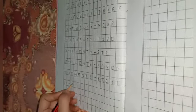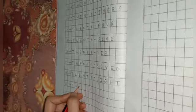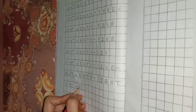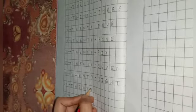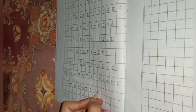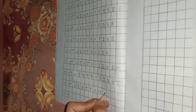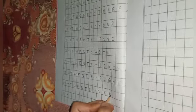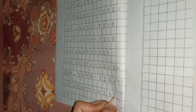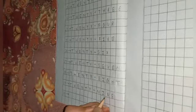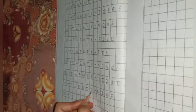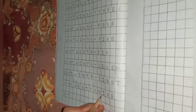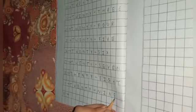Next is 29. T-W-E-N-T-Y, that's 20. N-I-N-E, that's 9. Twenty-nine, 29.